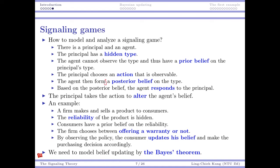Based on that posterior belief, the agent will respond to the principal — for example, buy it or not buy it. The principal can take an action to alter the agent's belief. As an example: a firm makes and sells a product to consumers, reliability is unknown, consumers have some prior estimation, the firm chooses to offer a warranty or not, the consumer updates the belief, and finally decides whether to buy. In the next two videos, we will first introduce Bayesian updating and then use one example to show how this can be modeled and how to find an equilibrium.